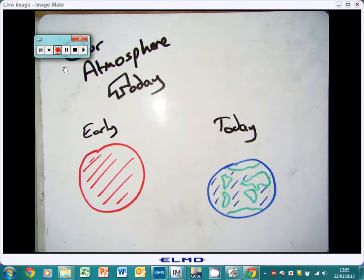This section looks at how our atmosphere today is formed. Originally, when we had the early Earth, there were different gases than what we've got today. This section will look at what gases are present today and how they've changed.